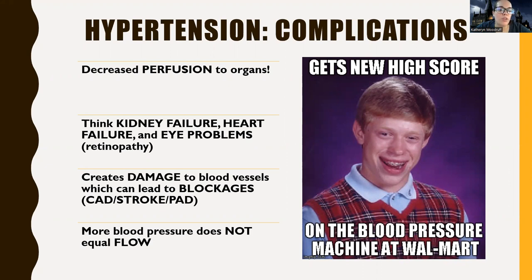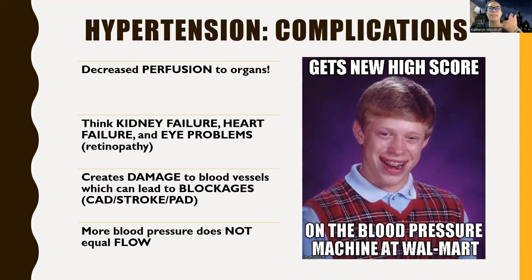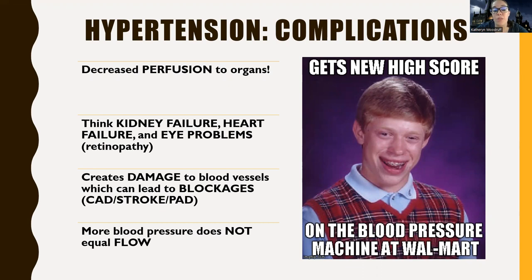Complications of hypertension are usually surrounding decreased perfusion to organs. Just because I have high blood pressure doesn't mean I have good blood flow. What's happening is there are narrow, constricted vessels with all this pressure, trying to push blood to organs — but because they're so constricted, they're actually bringing less blood to organs. The kidneys are super selfish: the second they stop getting flow, they fail. Hypertension can also lead to heart failure and coronary artery disease.